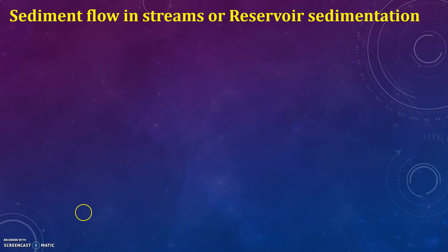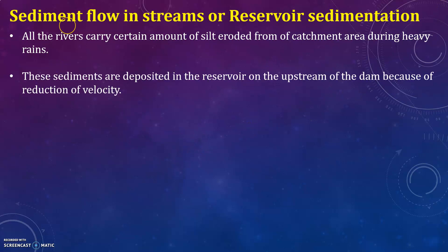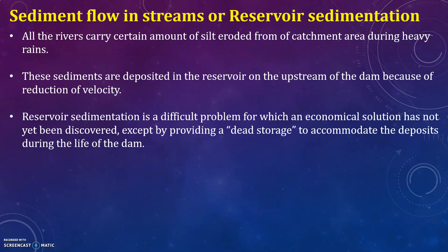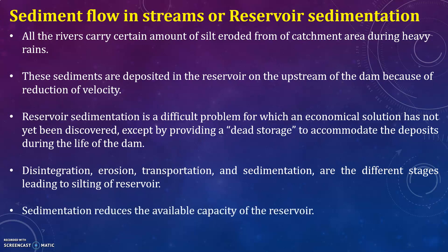Next, let us discuss sediment flow in streams, or reservoir sedimentation. All rivers carry a certain amount of silt eroded from the catchment area during heavy rainfall. These sediments are deposited in the reservoir upstream of the dam because of reduction in velocity. Reservoir sedimentation is a difficult problem for which an economical solution has not yet been discovered, except by providing dead storage to accommodate deposits during the life of the dam. Disintegration, erosion, transportation, and sedimentation are the different stages which lead to the silting of a reservoir.